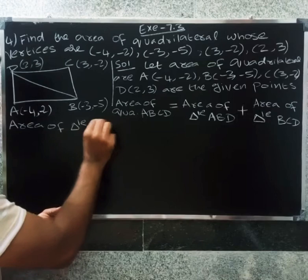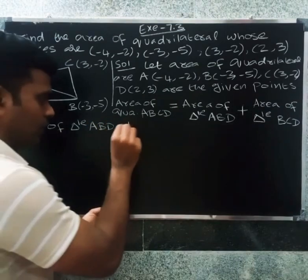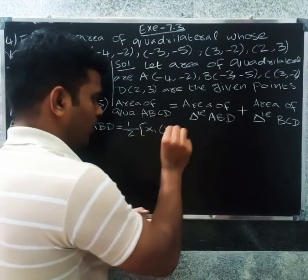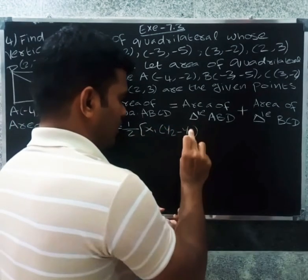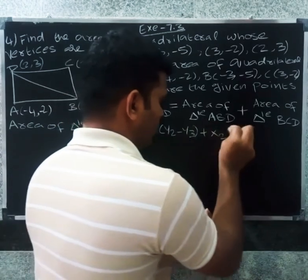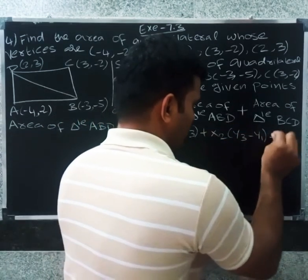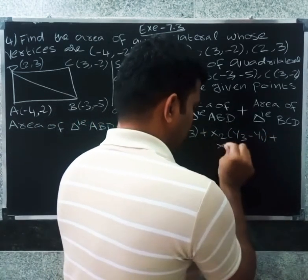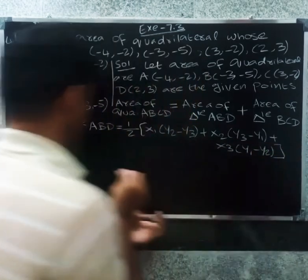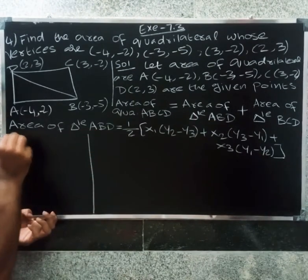Area of triangle ABD equals one-half times [x1(y2 - y3) + x2(y3 - y1) + x3(y1 - y2)]. Here x1 = -4, y1 = -2, x2 = -3, y2 = -5, x3 = 2, y3 = 3.